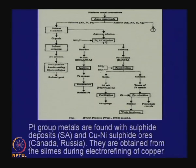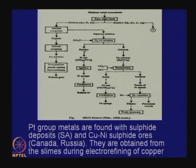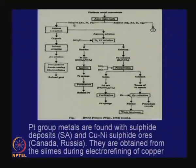The aqueous phase will have platinum and palladium. There are chemical steps for precipitation of these: ammonium chloride treatment gives a solution that will have palladium, and further steps yield palladium metal. For platinum there are separate steps. The residue that has the other platinum group metals and silver will be treated separately.